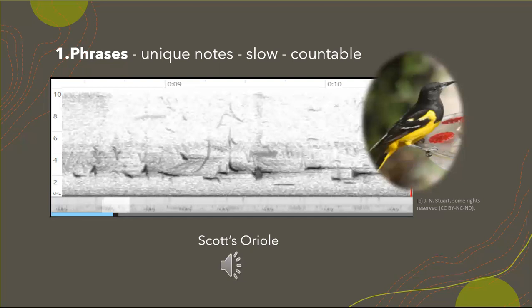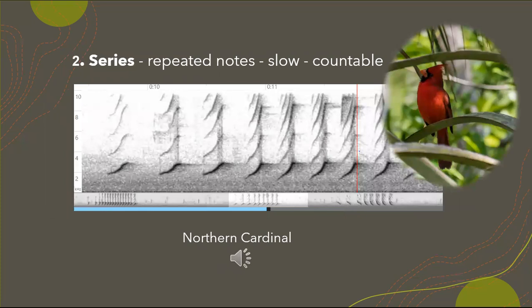Glenn has 10, Laura has 8, Terry is going for 29. Those are pretty good guesses — I'm assuming the 29 is probably counting both phrases that were played. Next is series. Series are repeated notes — the difference from phrases is that phrases are unique notes while series are repeated notes. Both are sung slow and are definitely countable. I'm going to play this northern cardinal — give it a count and put it in the chat.